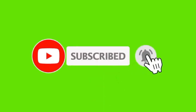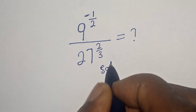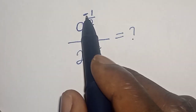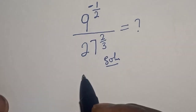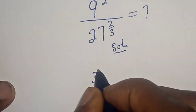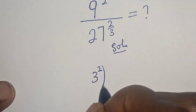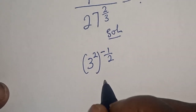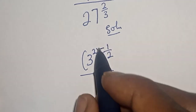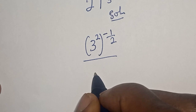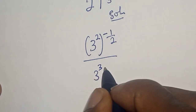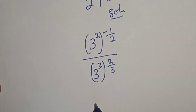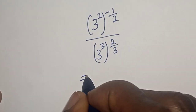Solution: 9 to the power of minus 1 over 2 can be written as 3 squared to the power of minus 1 over 2, divided by 27, which can be written as 3 raised to the power of 3, to the power of 2 over 3.